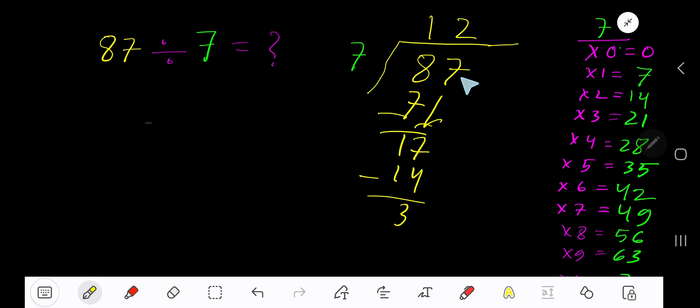Bring down the first zero. Before the zero there's a decimal. The decimal must come to the quotient directly. 7 goes into 30 how many times?